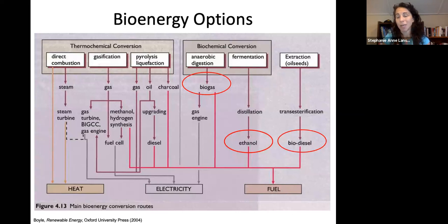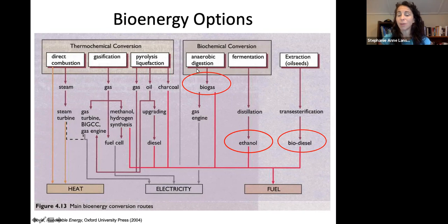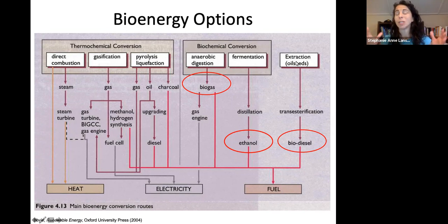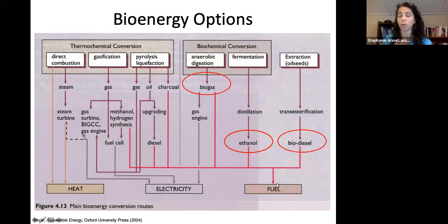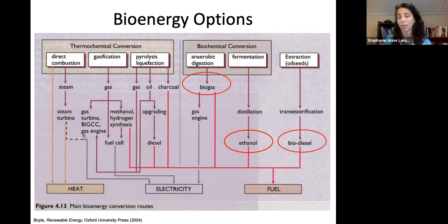Then we have our biochemical conversions, which is what we're going to discuss today — fermentation, where we have distillation that goes to ethanol used only as a fuel. We also have biogas, which more often goes through an engine for electricity, but can also be used as a natural gas fuel. Biodiesel is different — it's an extraction and chemical process that goes through a fuel pathway.